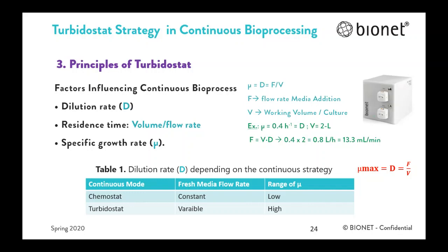The factors and main parameters influencing continuous operation are: the dilution rate, which is the ratio of flow rate to working volume; the residence time, which is the inverse of the dilution rate — that is, how long a molecule stays in the vessel; and the steady state, which is reached when the number of cells produced balances the number removed. It typically takes several residence times — three to five is typical — before a culture reaches a steady state. This example shows how to calculate the dilution rate according to a specific growth rate you want to reach or maintain, and then the flow rate of fresh media needed depending on the working volume in the bioreactor.